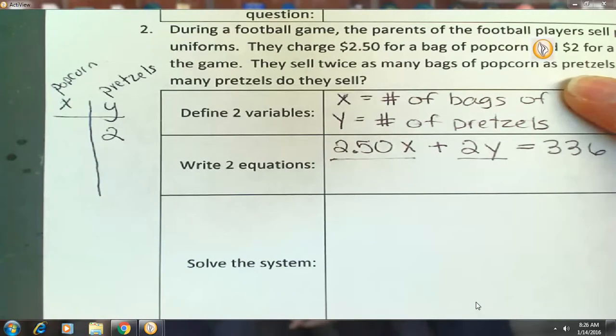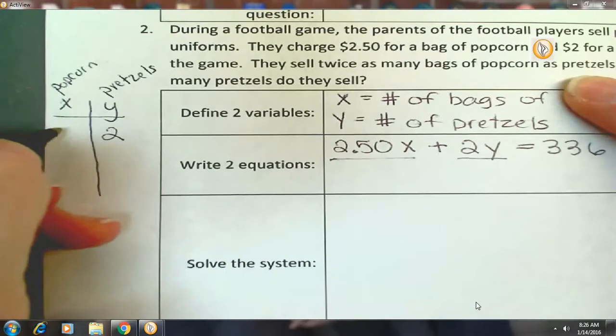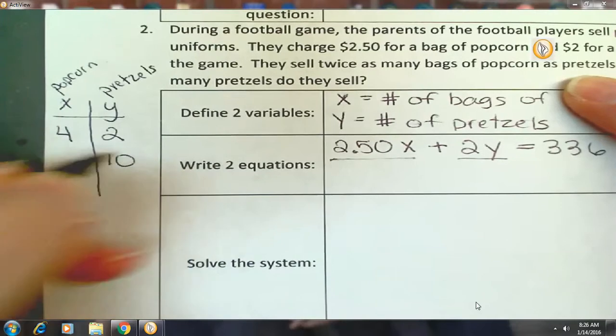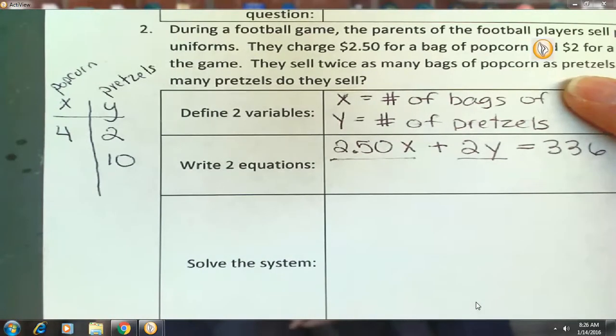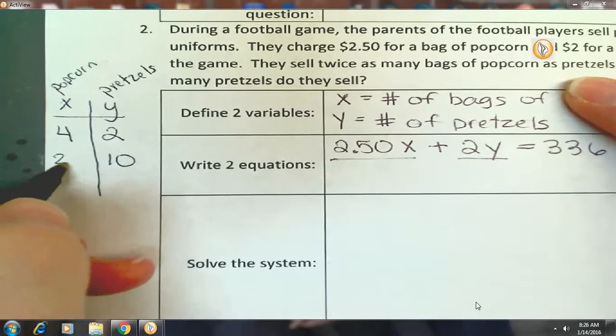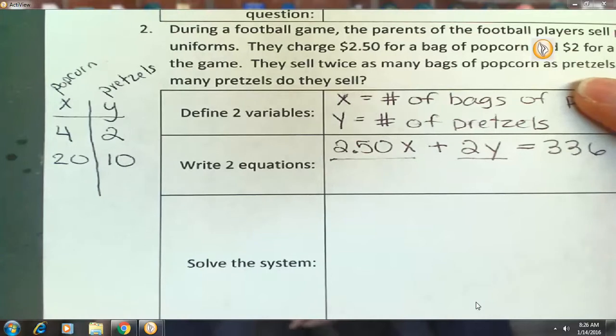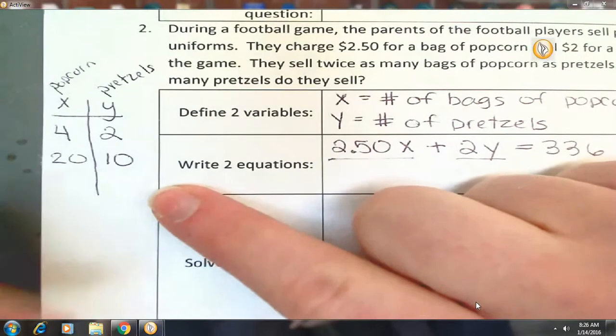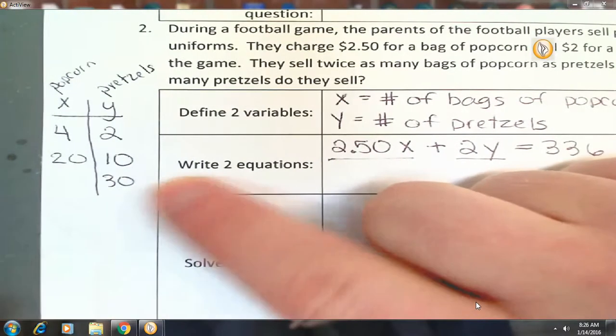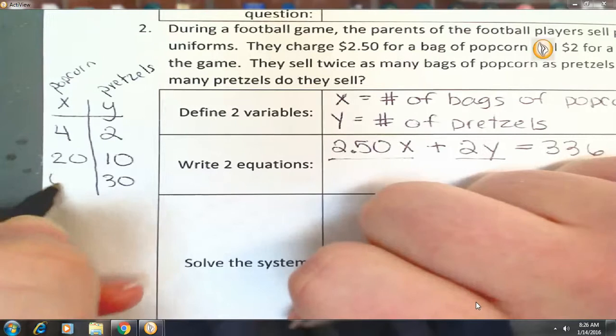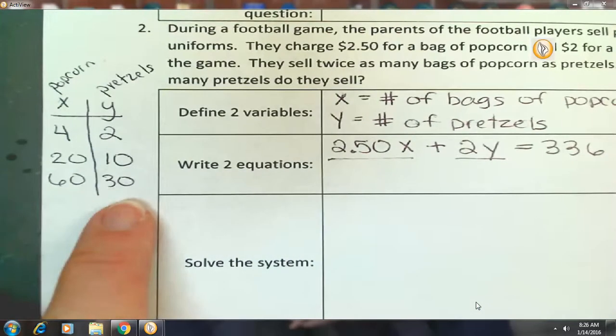So let's say they only sold two pretzels. How many bags of popcorn did they sell? Four. Let's say they sold 10 pretzels. How many bags of popcorn did they sell? 20. We don't really know. I'm just going to make up some numbers so we can think about this problem. Let's say they sold 30 pretzels. How many bags of popcorn did they sell? 60. They sold twice as many bags of popcorn as pretzels, right?